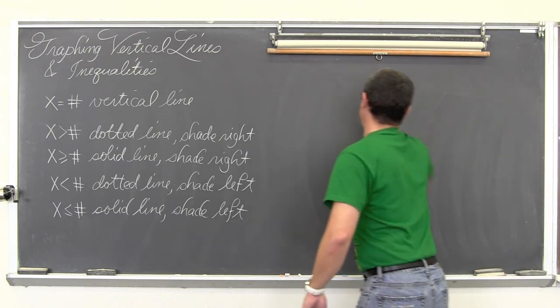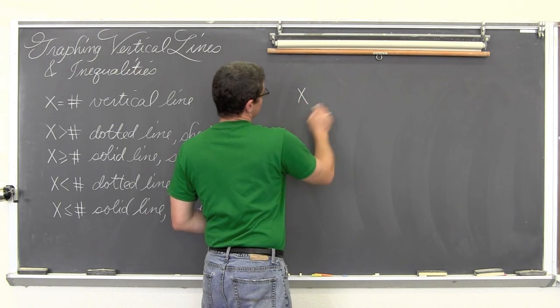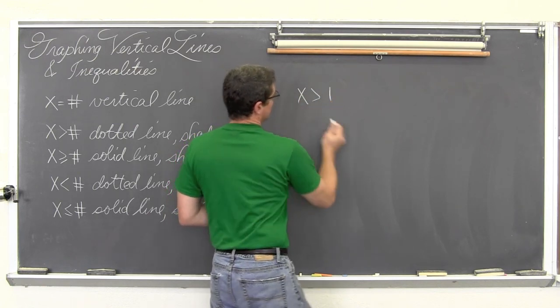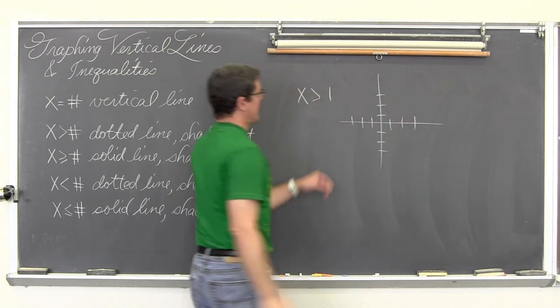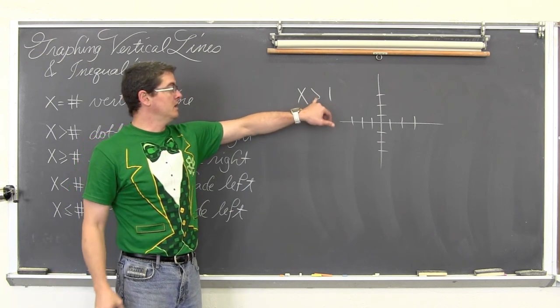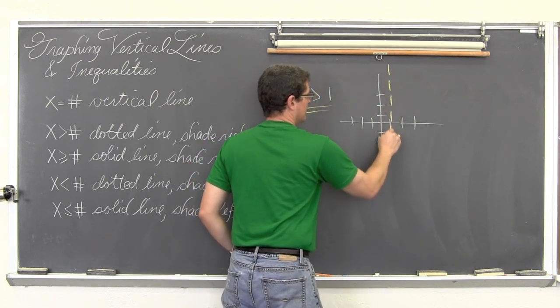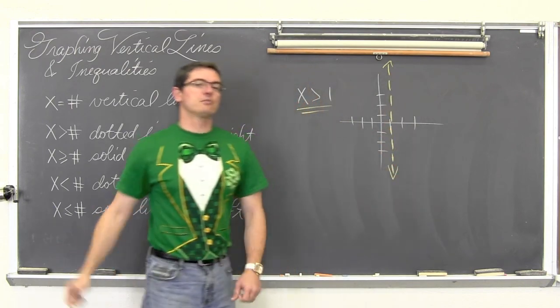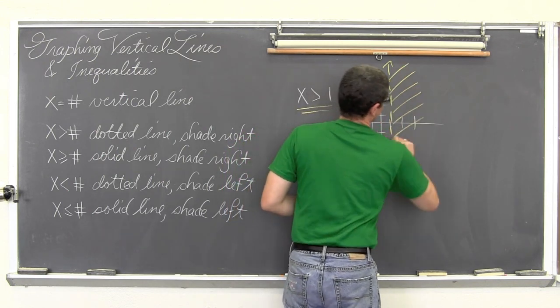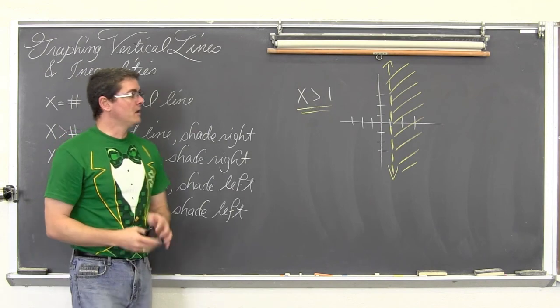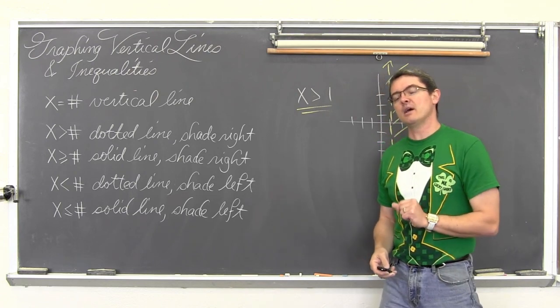And let's just get this erased really quick and do one more example. Let's take a look at this example, which is how to graph a, well not, we are going to move on to horizontal lines, but for right now what about x is greater than one? Just really quick here. x is greater than one, x equals number, vertical line, no equal sign, so this is going to be dotted, a dotted vertical line through x equals one, and your x's get bigger as you move to the right.